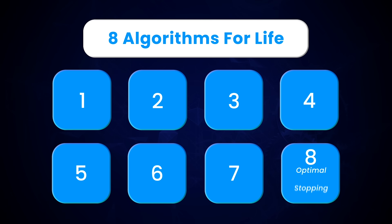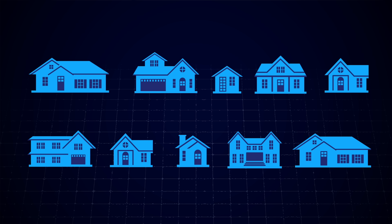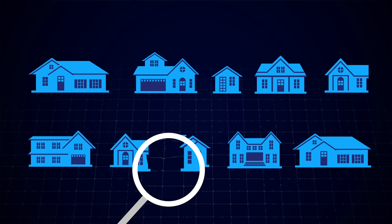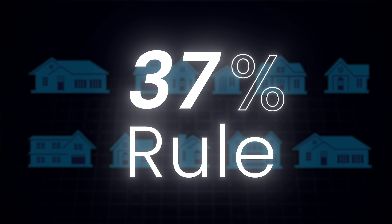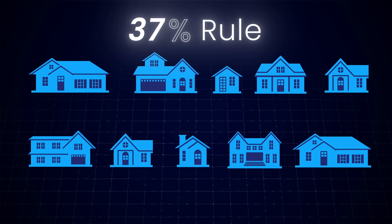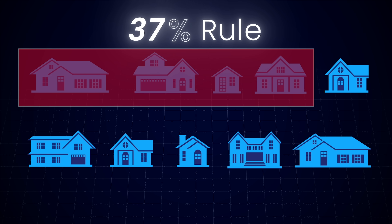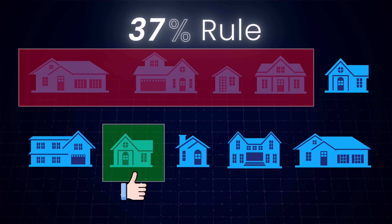Let's start with the optimal stopping algorithm. Imagine you are searching for a new apartment. You have only got a month to find it, and once you pass on an apartment, you cannot go back. How do you know when to stop looking and choose the best option? This is where the 37% rule comes in. It says that for the best chance of picking the optimal option, you should look at 37% of the available options, and then choose the next one that's better than all the ones you have seen so far.